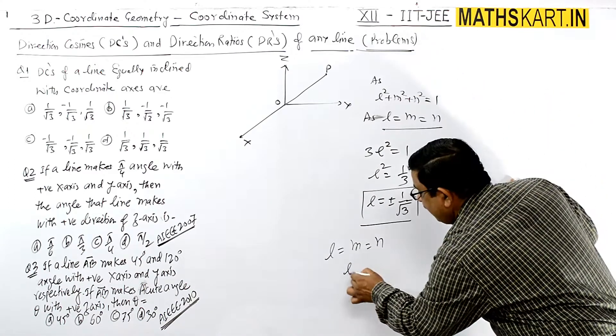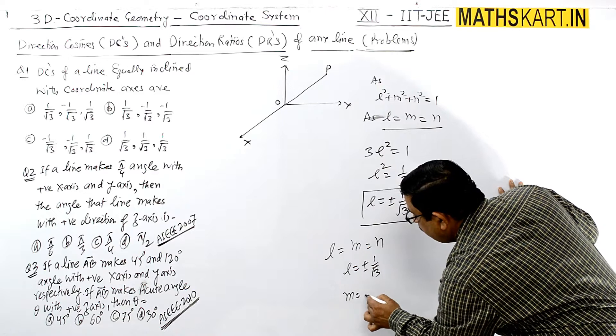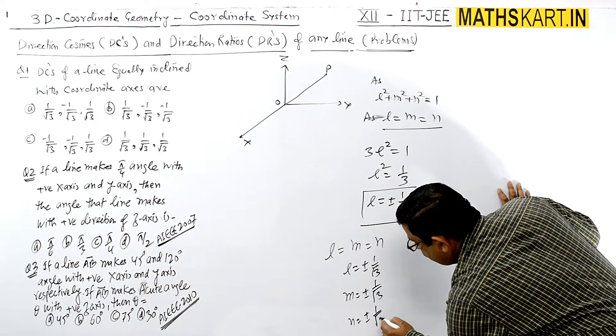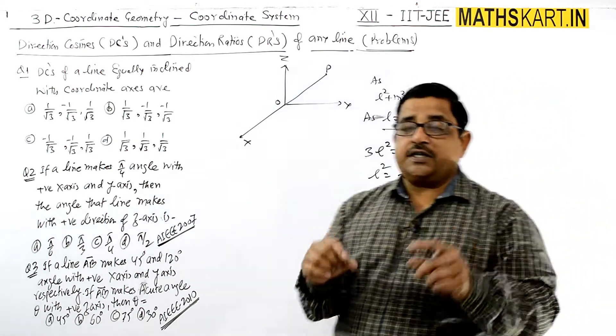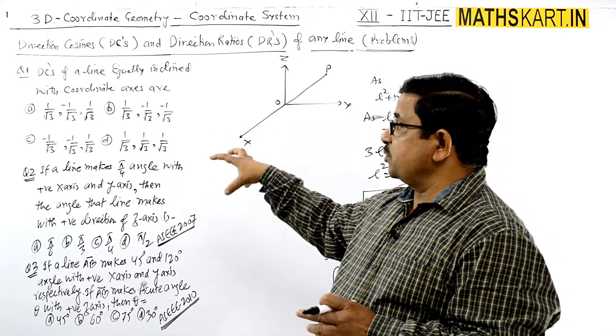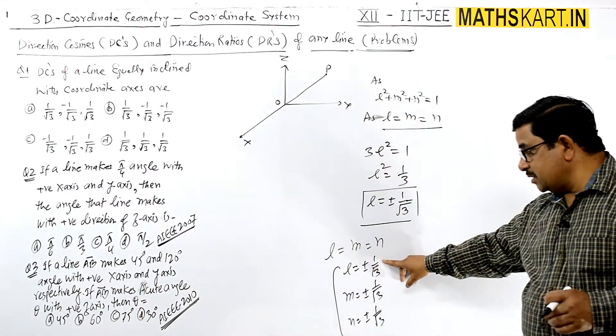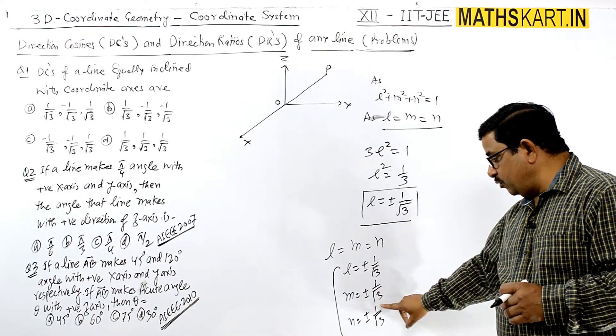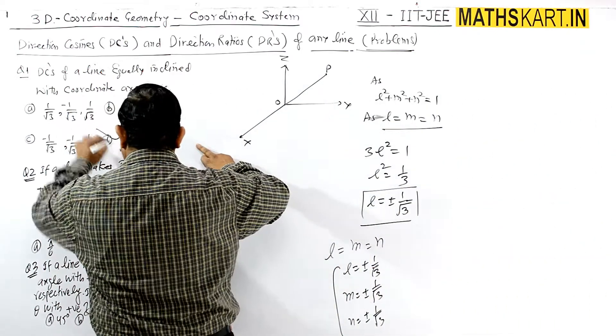So we can write L = ±1/√3, same with M and N. All these possibilities exist. We can check which option is right. L can take +1/√3, +1/√3, +1/√3 values, so the D option you can see is correct.